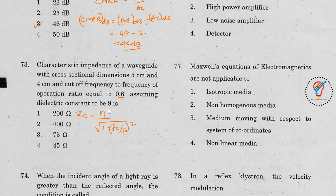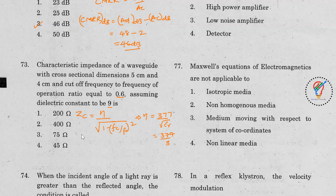Eta equals 377 divided by the square root of epsilon-r. Since epsilon-r is 9, the square root is 3, giving eta = 377 divided by 3. Now we substitute all values together.